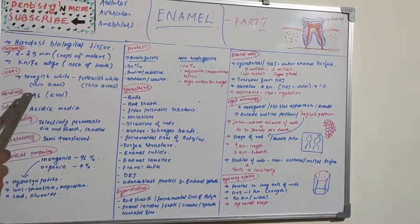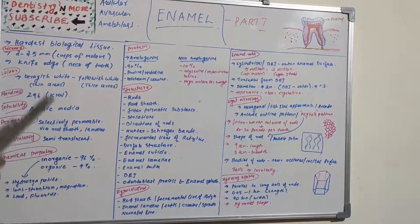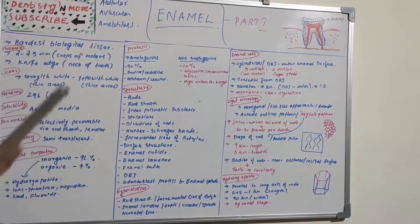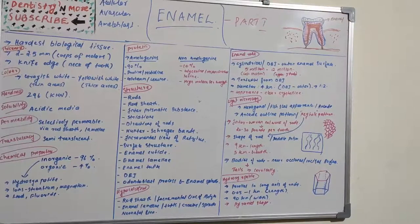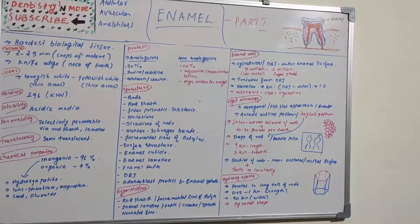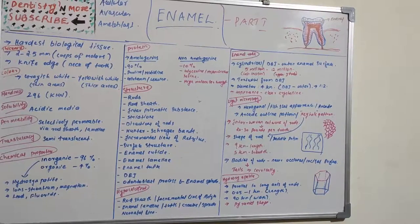Hardness is 296 Knoop hardness number, confirming enamel is the hardest biological tissue. Peripheral regions are harder. Regarding solubility, enamel dissolves in acidic media — this is why caries occurs. Sucrose is converted to lactic acid by bacteria, causing solubility of enamel, leading to cavitation known as dental caries.